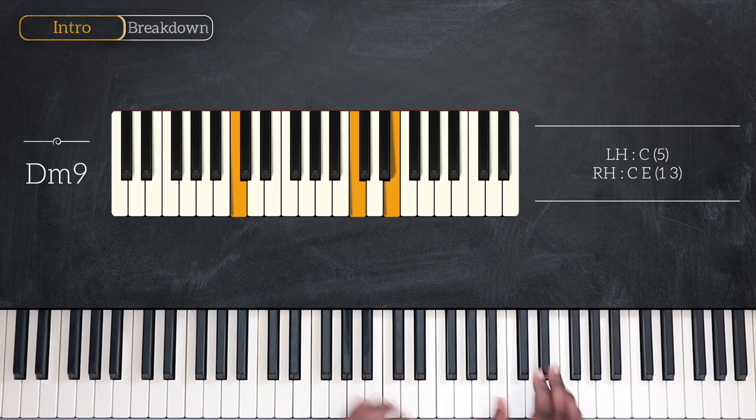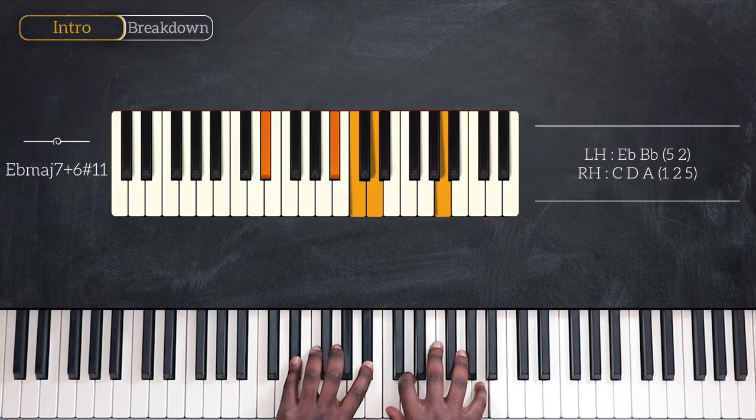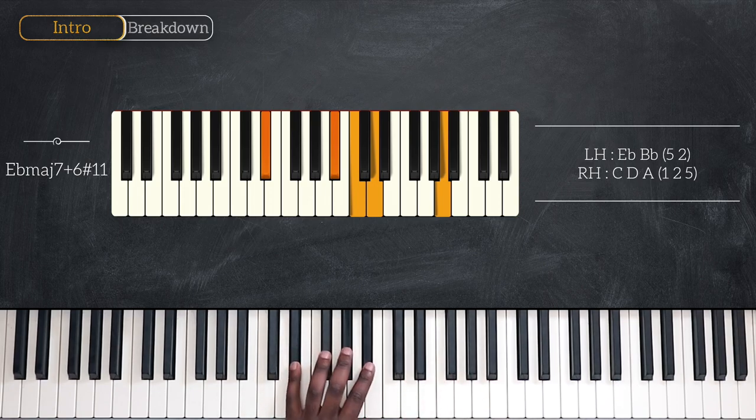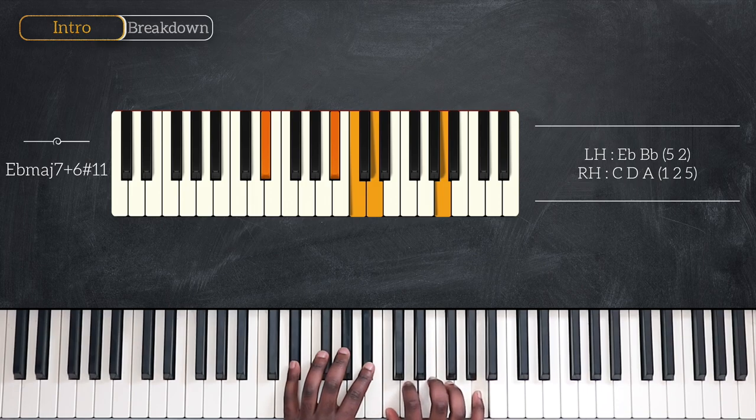Then for the second part of this intro we'll go off key playing this: Eb major 7 at 6 with a sharp 11. That's Eb and Bb, C, D and A. That's the sharp 11th.